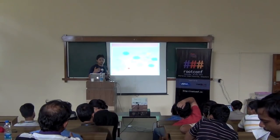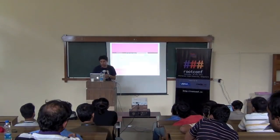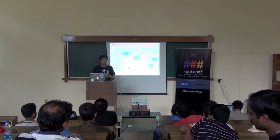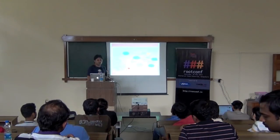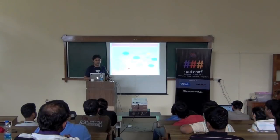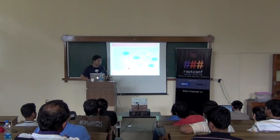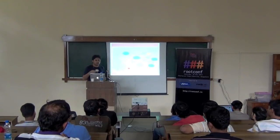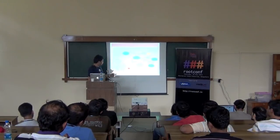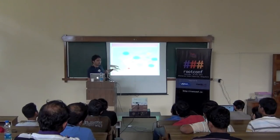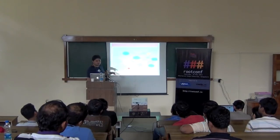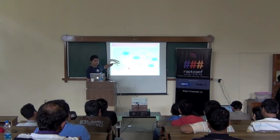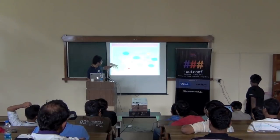There is something called the OpenVZ web panel — it's a free software Ruby application you can download and install. I install it on all the physical machines via Puppet. It has an API key — you generate an API key for each machine and connect them all to the central management node. That central node can then talk to any of the physical machines through this API.